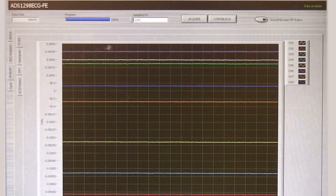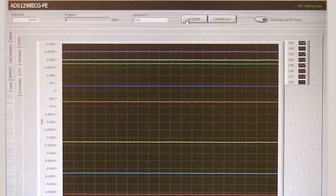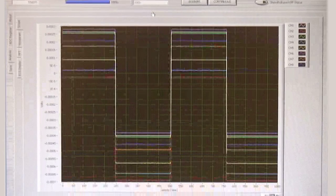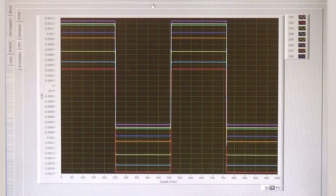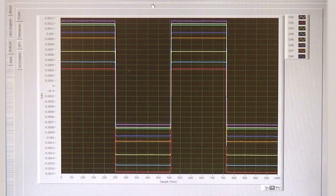Now when I press acquire again, a square wave of several millivolts will let me know that the PDK is communicating correctly with the computer.